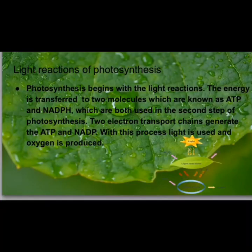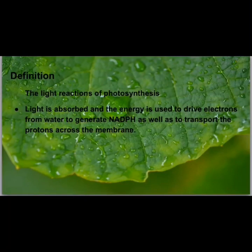Two electron transfer chains generate the ATP and NADPH. With this process, light is used and oxygen is produced. The light is absorbed and the energy is used to drive electrons from water to generate NADPH, as well as to transport the protons across the membrane.